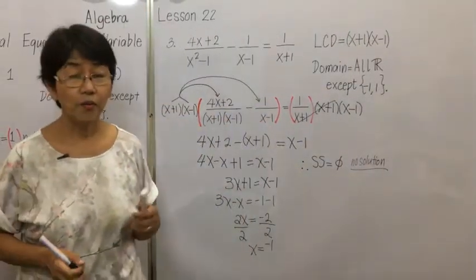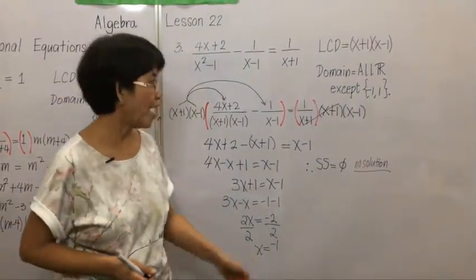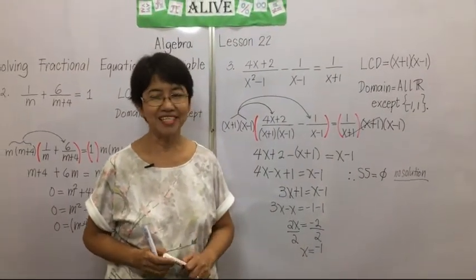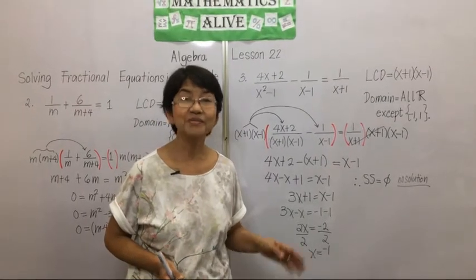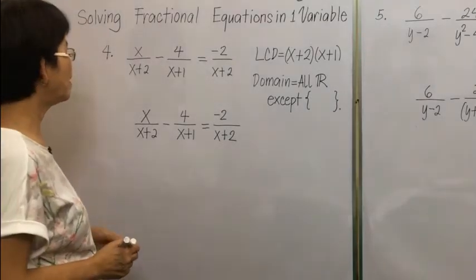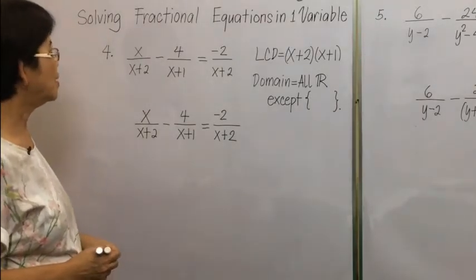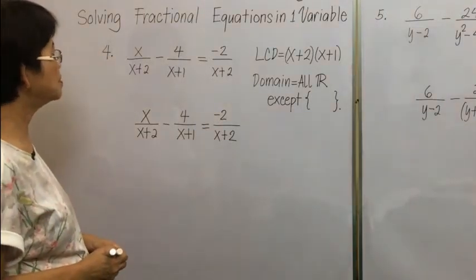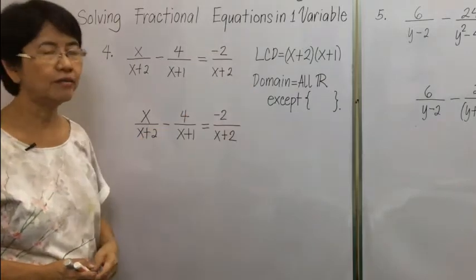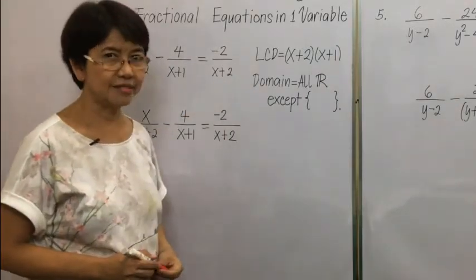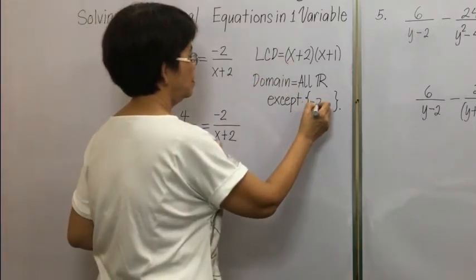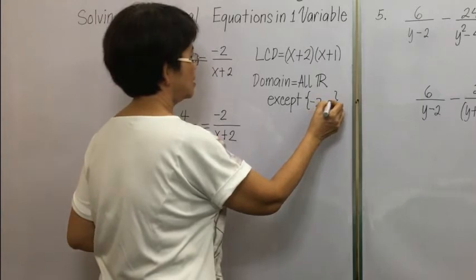We don't say we have no solution set — we do have a solution set, but the solution set is empty. So we say there is no solution to the equation. For example number 4, we have the equation with LCD equal to x plus 2 times x plus 1. The domain is all real numbers except x equals negative 2 and x equals negative 1.